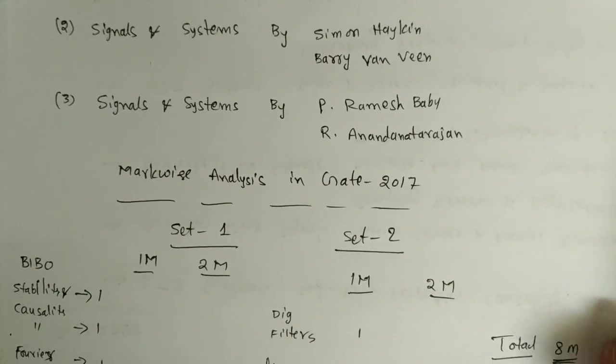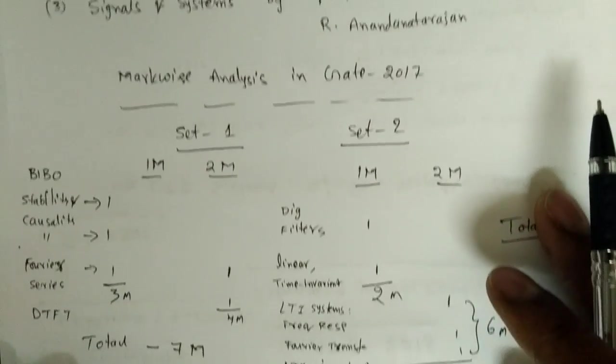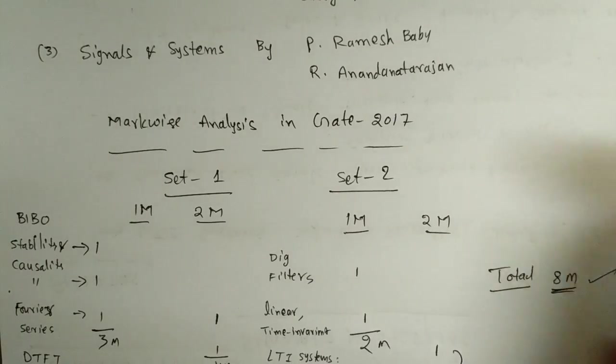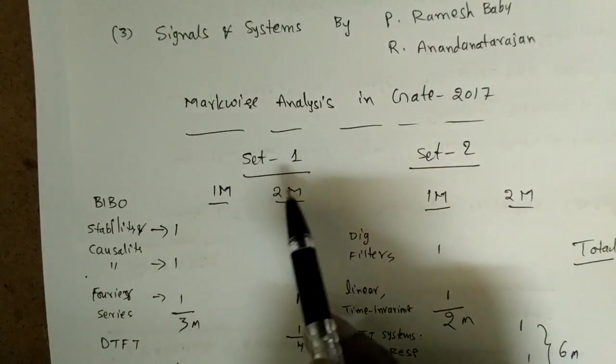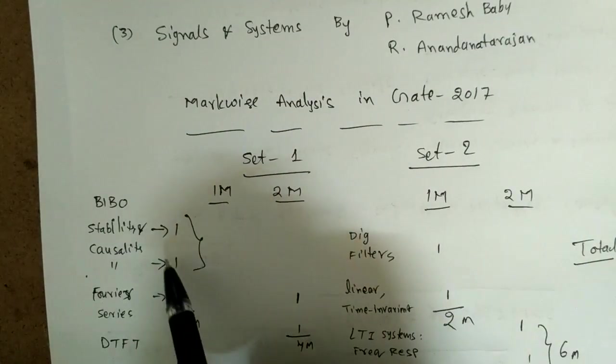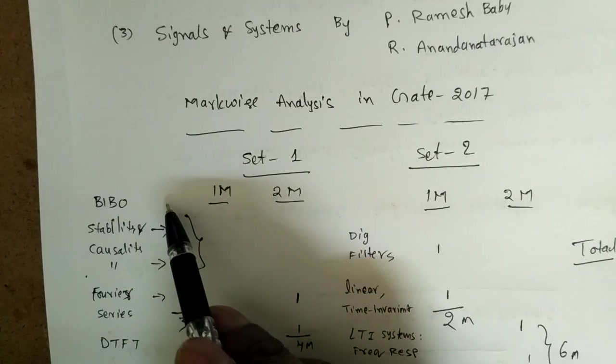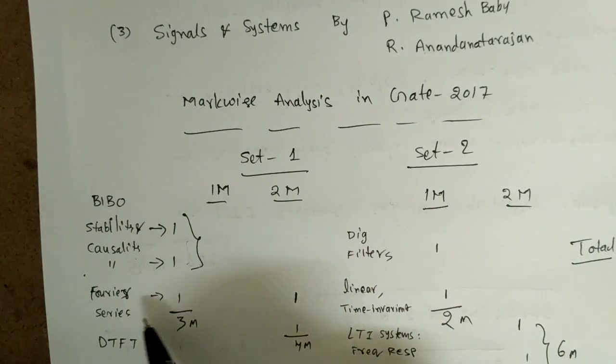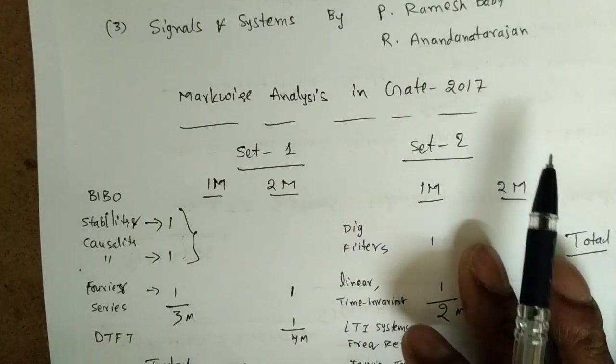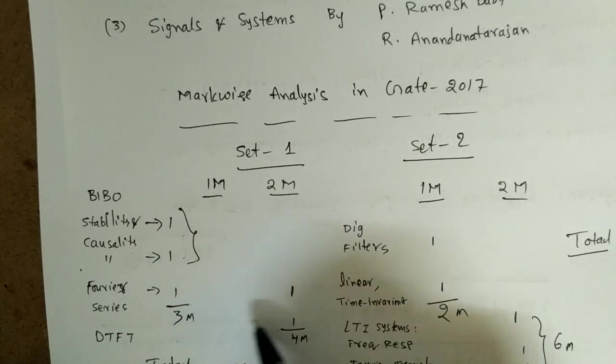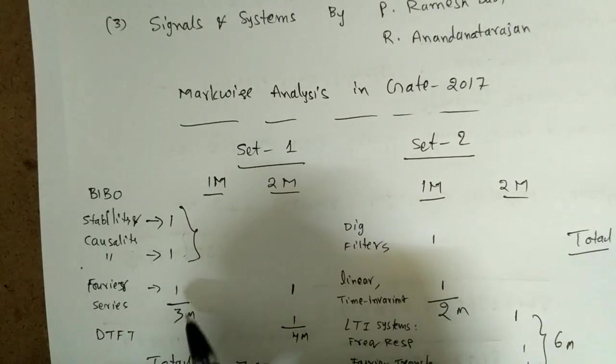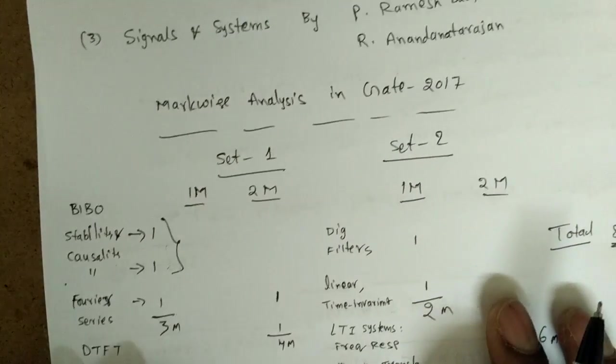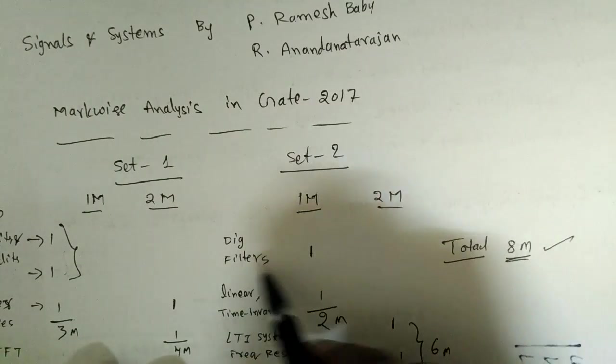Next we have to see markswise analysis in GATE 2017. In Set 1 we got about 7 marks and in Set 2 we got about 8 marks. In Set 1, we got two questions from the properties itself - bounded input bounded output stability and causality. One question from Fourier series for one mark and two marks. One more question from discrete time Fourier transform. Totally three questions for three marks, two questions for four marks - total we got seven marks from signal systems alone.